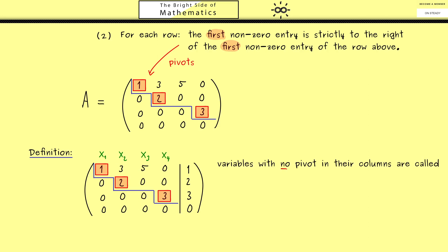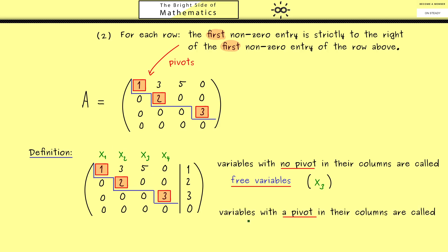In our example, there is only one free variable, namely x3, because in all other columns we find a pivot. The variables that do have a pivot in their column get a special name: they are called leading variables — and they are also dependent on the free variables, as we will see soon. In our example x1, x2, and x4 are the leading variables. Our goal is to rewrite all leading variables as functions depending on the free variables, and by doing that we get the whole solution set.